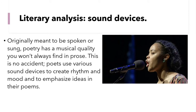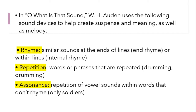Literary analysis: sound devices. Originally meant to be spoken or sung, poetry has a musical quality you won't always find in prose. This is no accident. Poets use various sound devices to create rhythm and mood and to emphasize ideas in their poems. In 'O, What Is That Sound?' W. H. Auden uses the following sound devices to help create suspense, meaning, and melody.